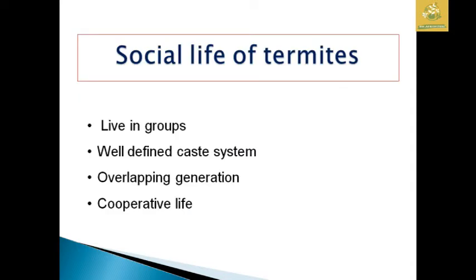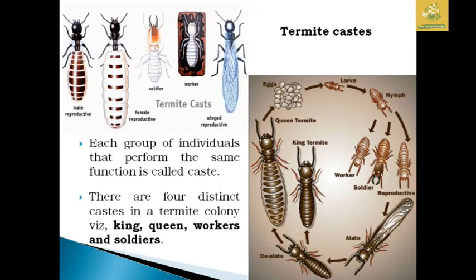Termites are said to be social life forms in our environment because they live in groups and have a well-defined caste system — the queen, which is the leader of the colony, workers, and soldiers. They have overlapping generations and cooperative life. The five different castes present are: male reproductive, female reproductive, soldier, worker, and winged reproductives.